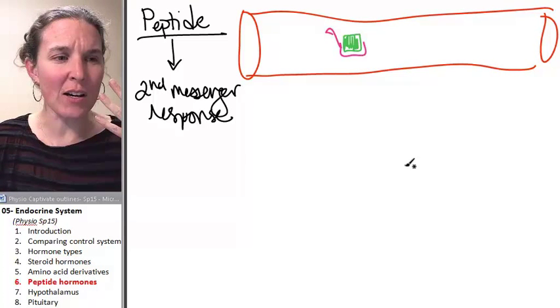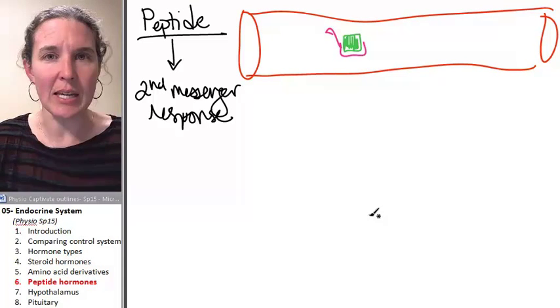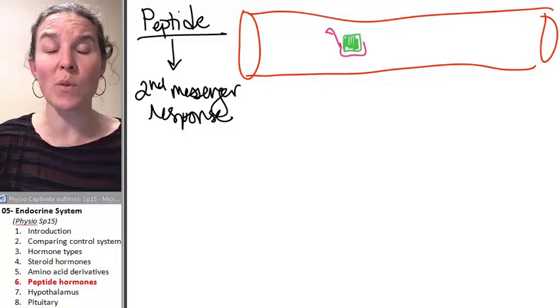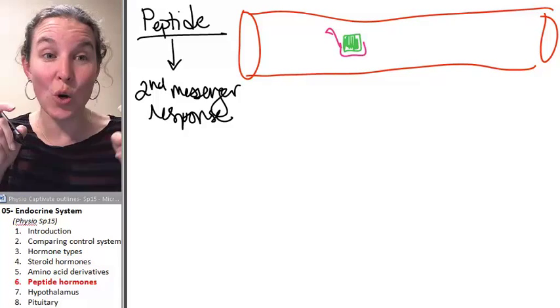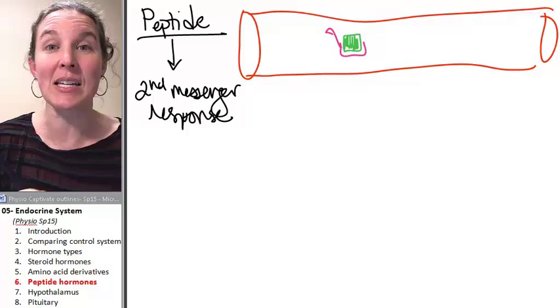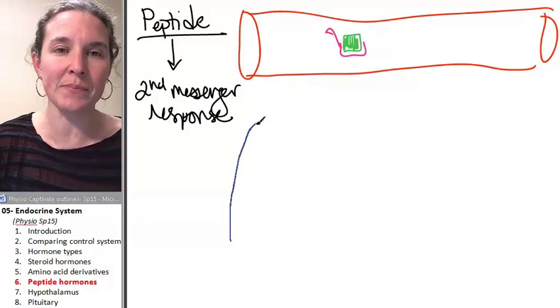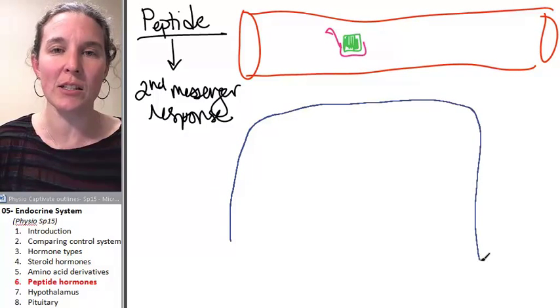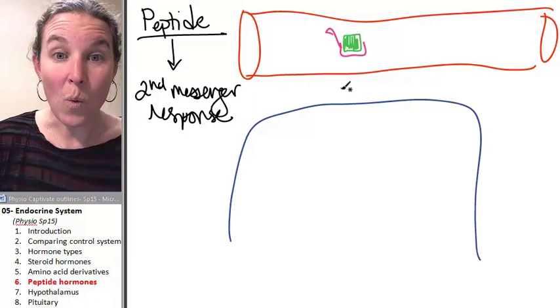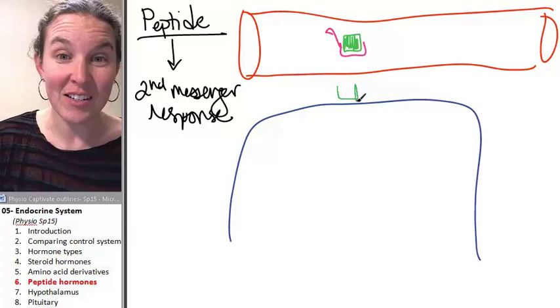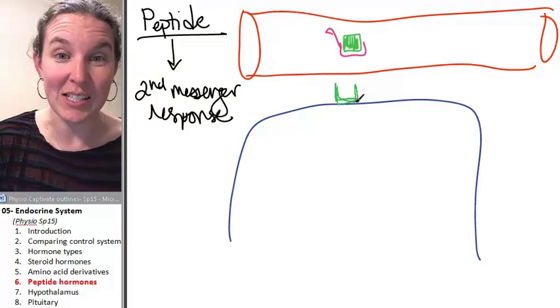Other systems, I believe smell involves a second messenger response. And so this technique, this tool, this mechanism can be seen in other systems. Let's draw ourselves a cell. And I'm going to illustrate for you what a second messenger system or mechanism looks like.